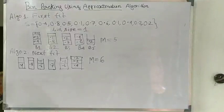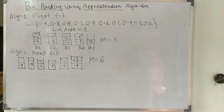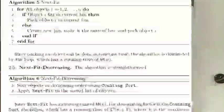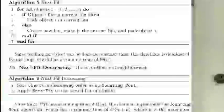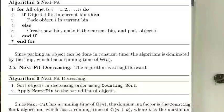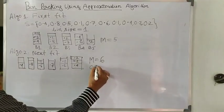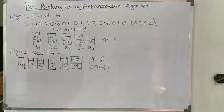The complexity of the Next Fit algorithm requires only one for loop, so the complexity is O(n). If we apply counting sort, the complexity becomes O(n + k).